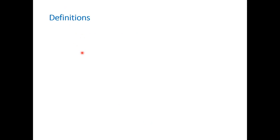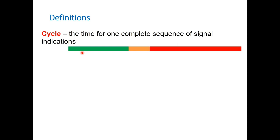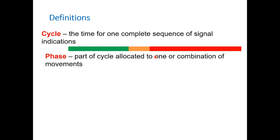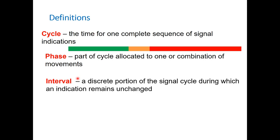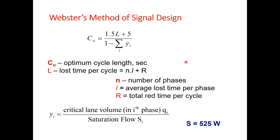A few definitions before we go for signal design: the cycle is the time of one complete sequence of signal indications from green to green, including green, amber, and red phases. A phase is the part of the cycle allocated to one or a combination of movements. An interval is a discrete portion of the signal cycle during which an indication remains unchanged — for example, a green interval, amber interval of four seconds, or red interval.